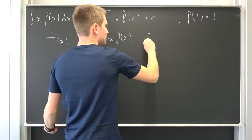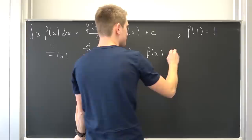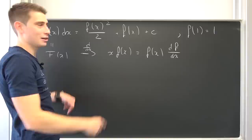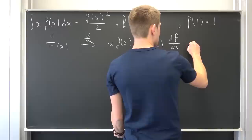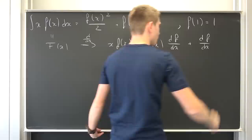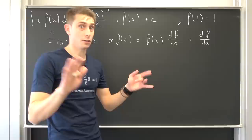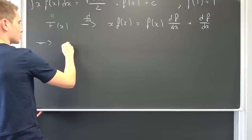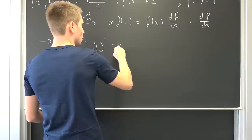We also have to take the inner derivative — that is d/dx of f of x, meaning times df/dx. We are going to differentiate f of x, and if it's differentiable we just add the differential of f to it. Now if we write this into easier notation, this is going to be the same as x times y being equal to y times y prime plus y prime.